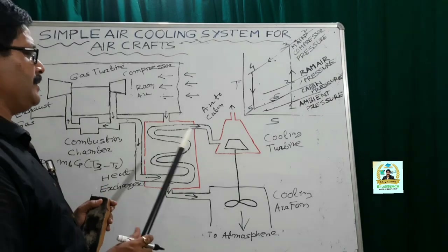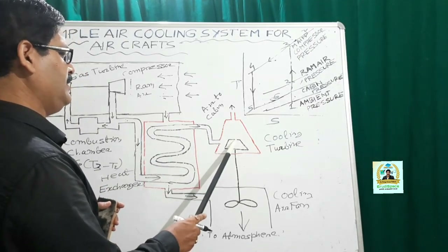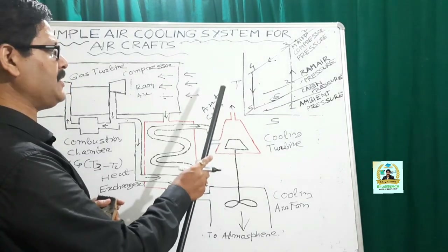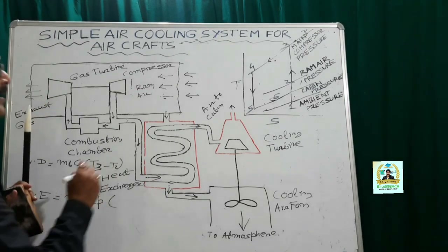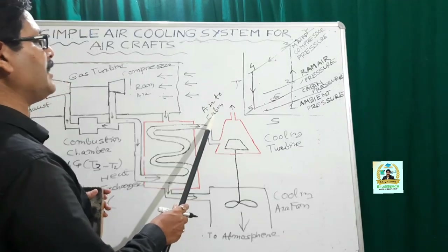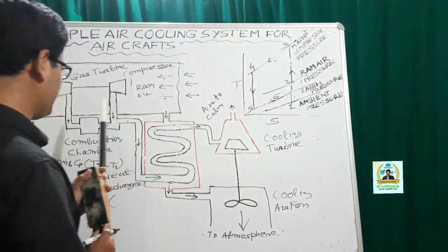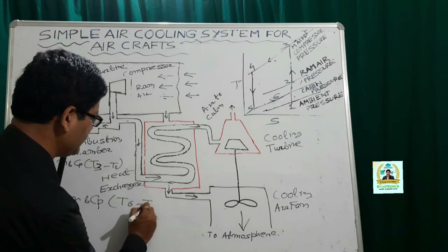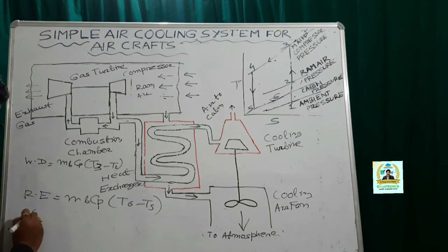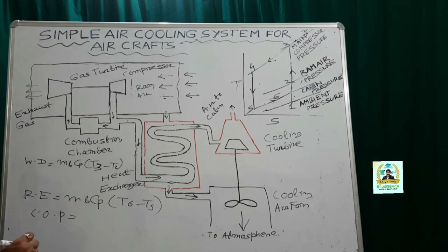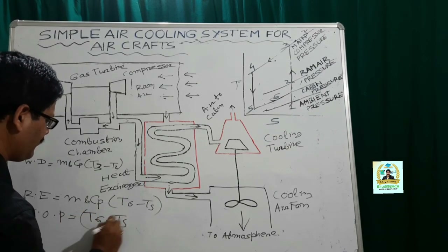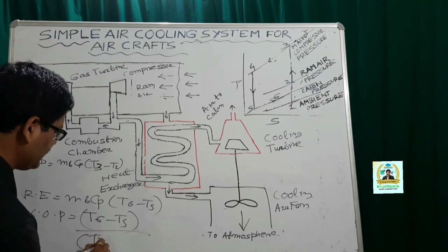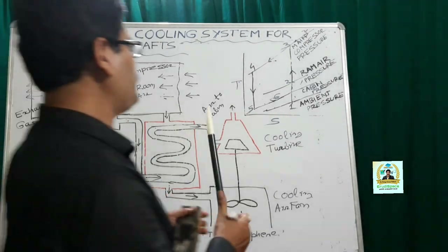The refrigerating effect is the heat absorbed by the air leaving the cooling turbine and entering the cabin or cockpit. That is m_b multiplied by c_p multiplied by the temperature difference T6 minus T5, since the air enters the cabin at T5 and leaves at T6. The COP is then refrigerating effect divided by work done, which equals (T6 minus T5) divided by (T3 minus T2).